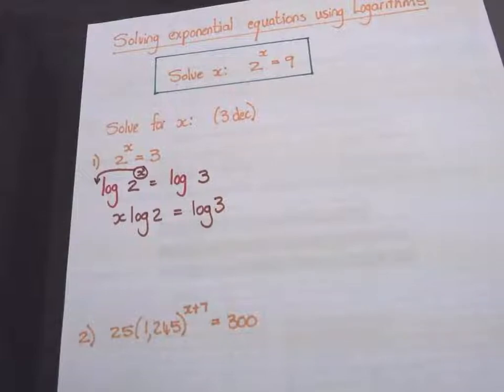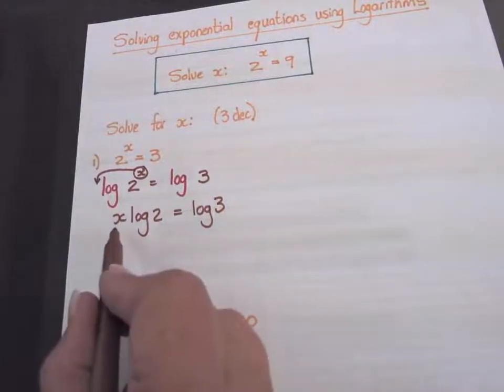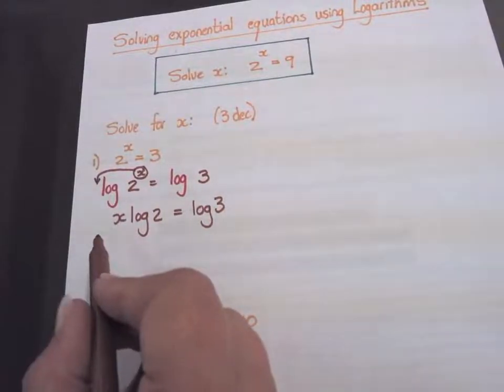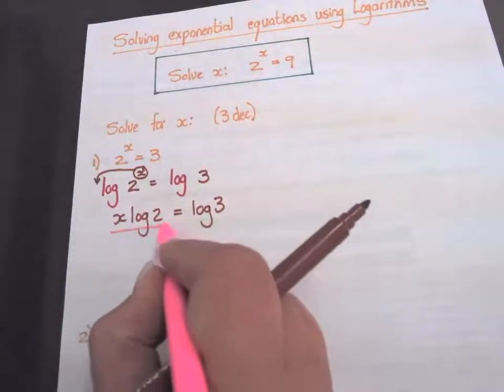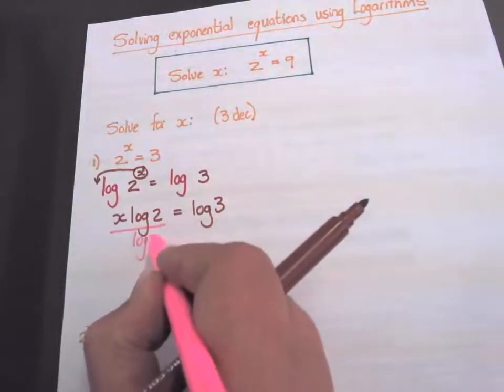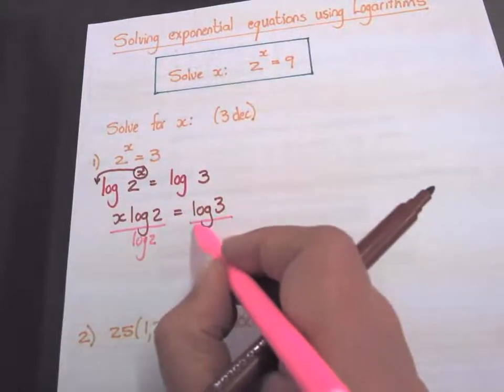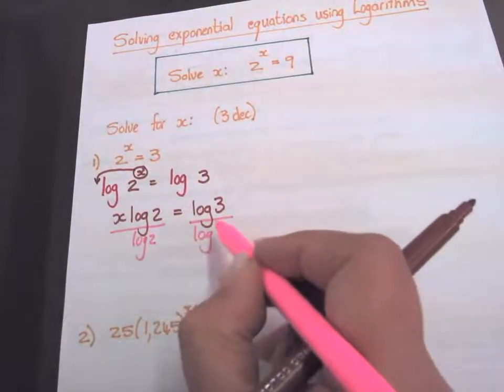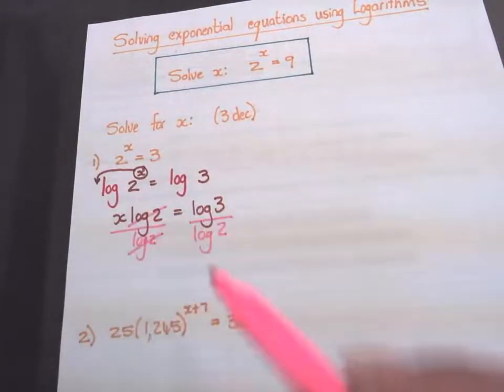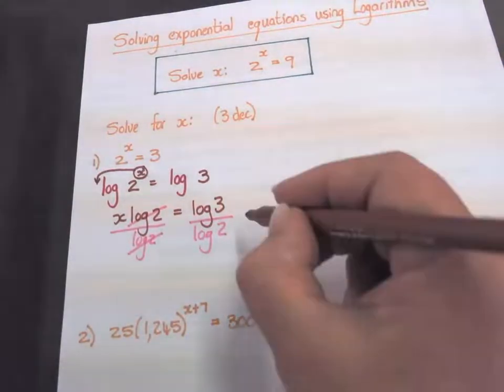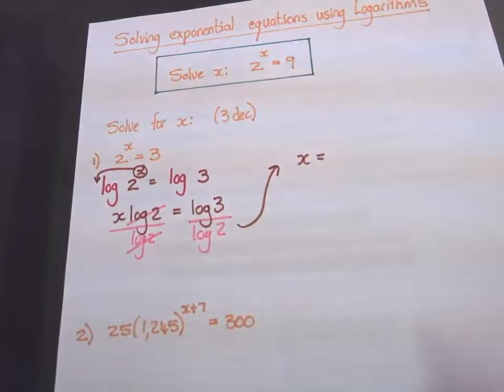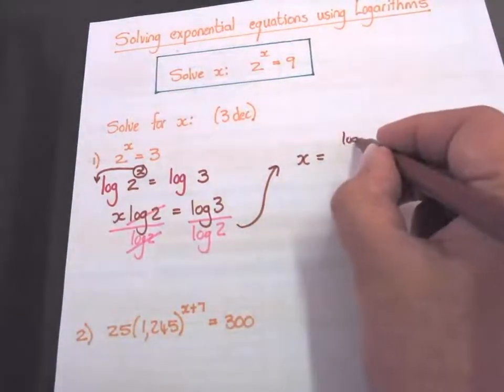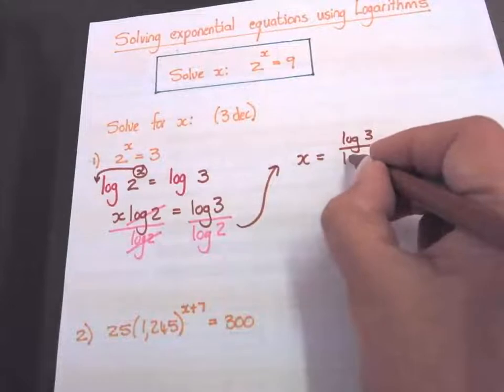I want to solve for x so I must get x alone. Then I'm going to divide by log 2 on the left hand side. And what you do on the left you must do on the right as well. So these two cancel out, and we have x equals log 3 over log 2.